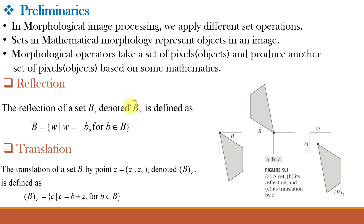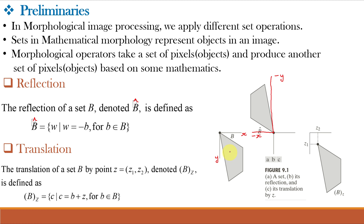Reflection of a set B, denoted by B-cap, is defined as: B-cap equals the set of elements W such that W is formed by multiplying each of the two coordinates of all elements of set B by minus 1, for all B belonging to capital B. So, this is our set B on the x-axis and y-axis. B-cap will be on the minus-x and minus-y axis, giving us a reflected image. This is the original and this is just the reflection of B.